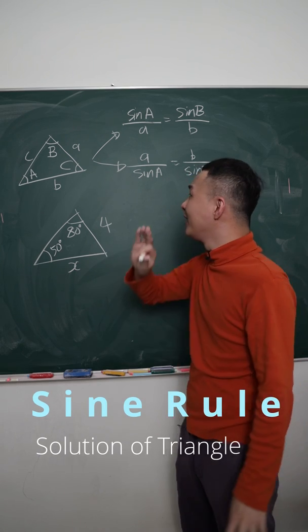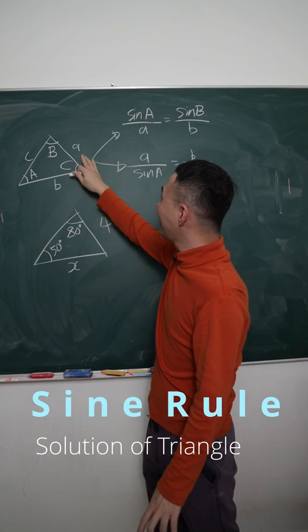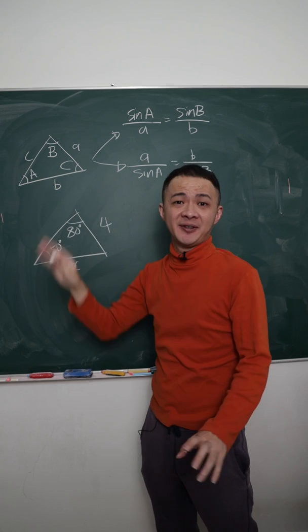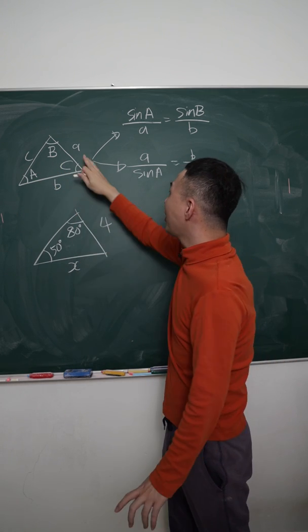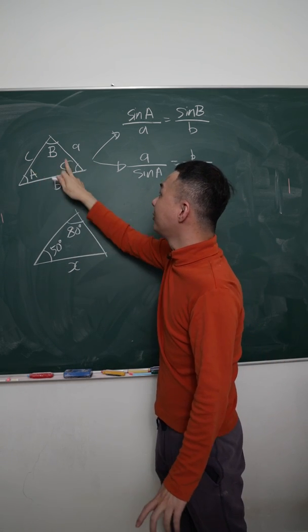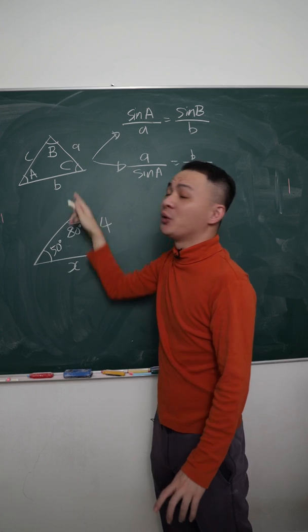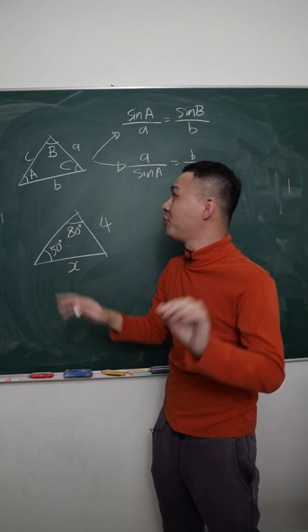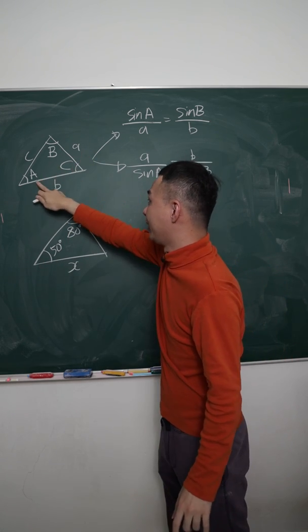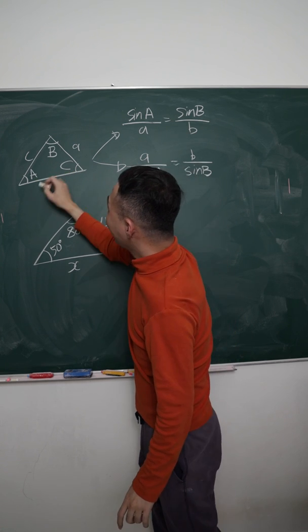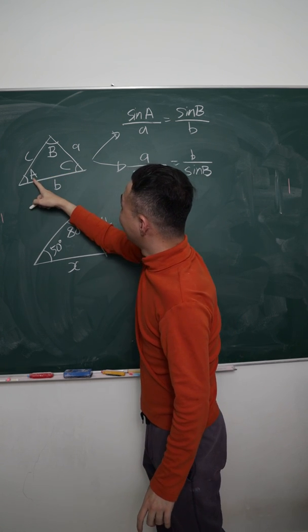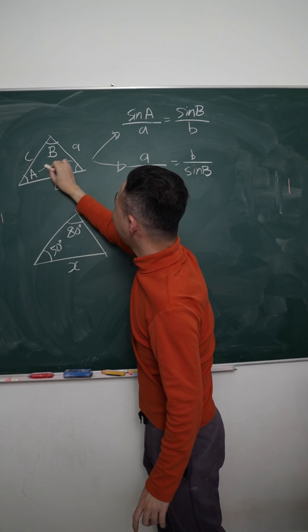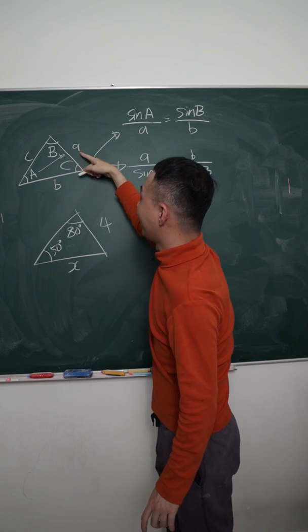First, you must understand the small letter ABC and capital ABC. Small letters are used for length and capital letters are used for angles. They have a relationship: the angle of capital A has the opposite length of exactly small letter A.